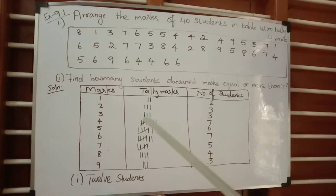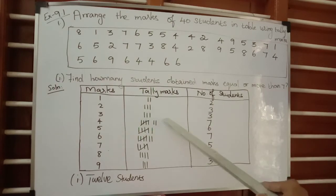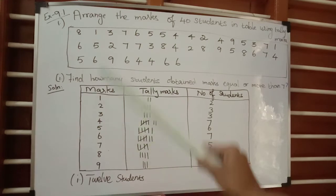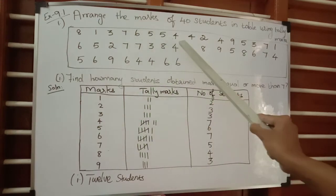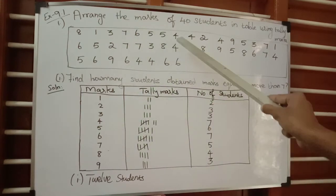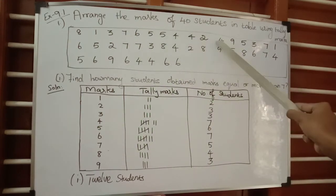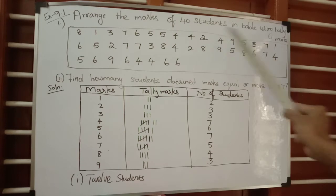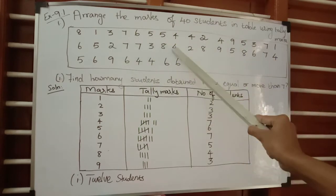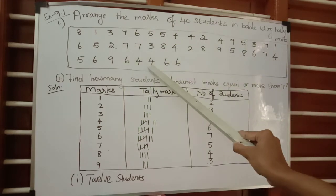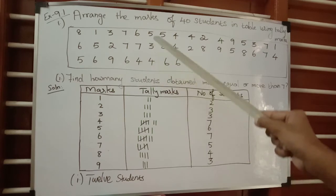Similarly, count for the number three: it appears three times. So draw three vertical lines for the tally marks. Therefore, the number of students for mark three is also three.